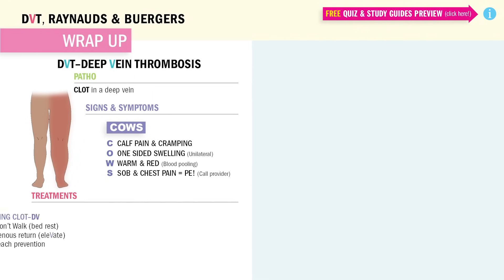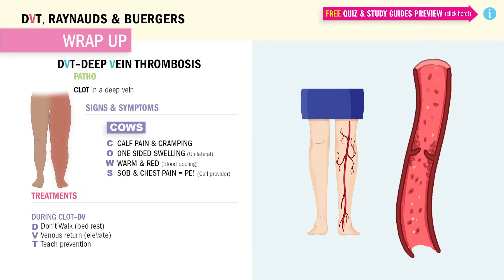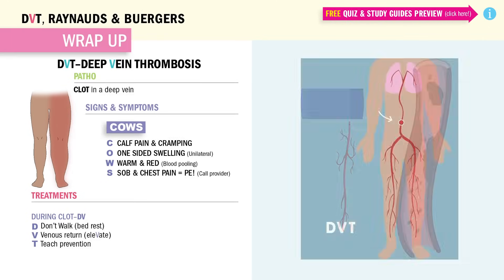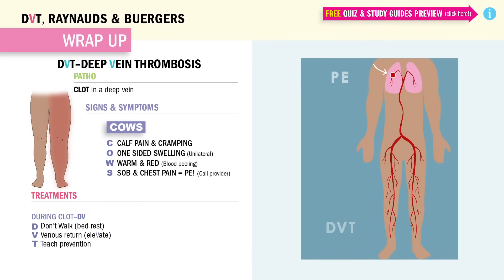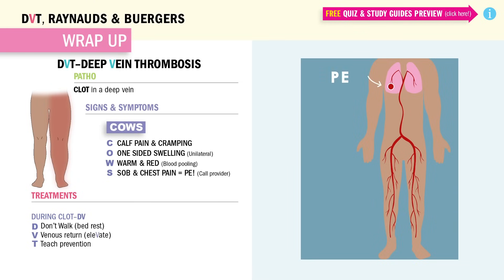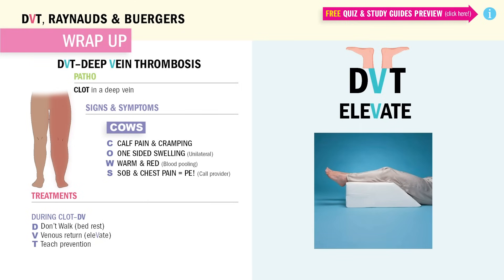For treatment of DVT — we've got a clot in the legs. It's like a ticking time bomb, and if it breaks loose it goes straight to the lungs and kills the patient. Remember the acronym DVT. D for don't walk — we're only doing bed rest, we don't want to loosen that clot. V for venous return of the blood — elevate the leg with DVT. And T for teaching clot prevention. But we're only doing these things after the clot is resolved.